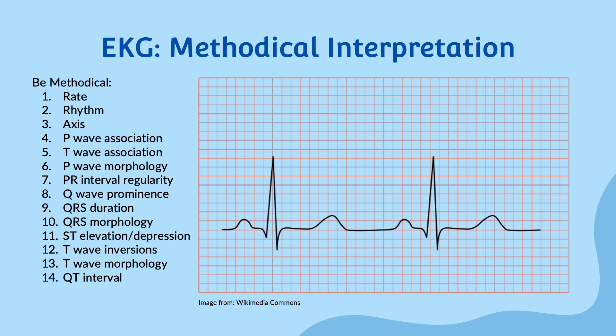Next, we can take a look at the QRS complex itself. We should identify any prominent Q waves, which may indicate previous pathology such as a myocardial infarction. A significant Q wave is a Q wave that is greater than 1 by 1 in terms of the small boxes on the EKG. We can also ensure that the morphology and the duration of the QRS is normal. The QRS complex represents the electrical activity in the ventricles as they depolarize and should be between 0.08 and 0.12 seconds in duration, which equals about 2 to 3 small boxes.